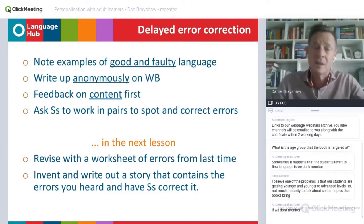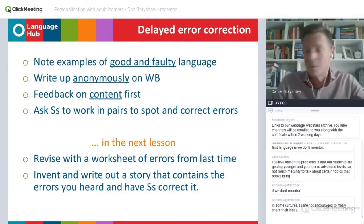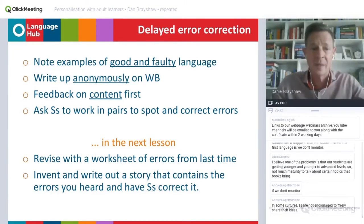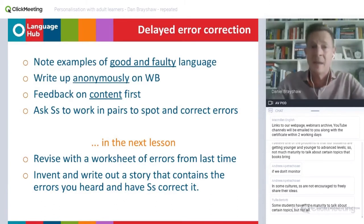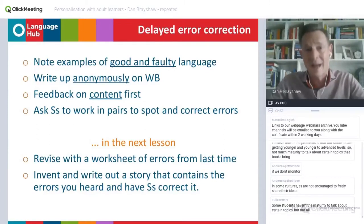We can even reinforce that by starting the next lesson with some sort of revision worksheet, picking up again on the errors from the previous lesson. The best way to do that is just to take a photograph of the board with your mobile phone. And if you've got time, you could even invent a text — a story or a paragraph that contains some of those errors — and ask the students at the beginning of the next lesson to correct it again. So that's delayed error correction — very useful for providing feedback on language, which in turn helps students to see the value of these fluency activities that we use at the end of lessons.